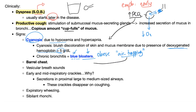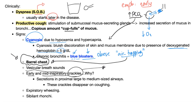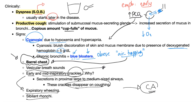Since there is air trapping and air stacking, the patient will have a barrel chest. Breath sounds are vesicular (normal), but you might find mid-inspiratory crackles — crackles sound like a hookah, like air bubbling through fluid. These crackles disappear on coughing, unlike bronchogenic carcinoma where you cannot cough away cancer. You'll also find expiratory wheezing. In chronic bronchitis and any obstructive lung disease, there is a prolonged expiratory phase because the patient cannot get the air out.